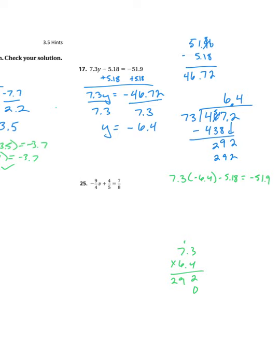28 plus 1 is 29. 0 as a placeholder. 6 times 3 is 18. 42 plus 1 is 43. So I'm going to put my decimal point two places over.